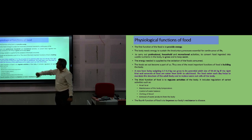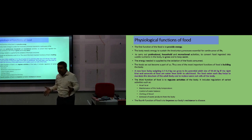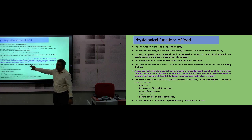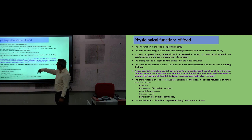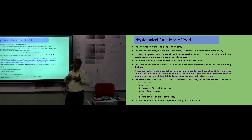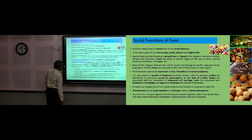Energy supplied for the oxidation of food makes food a part of us. One of the most important functions of food is body building. A newborn baby weighing 2.7 to 3.2 kg grows to a potential adult size of 55 to 60 kg — this is because they eat the right kinds and right amounts of food. From birth to adulthood, food helps maintain the structure of the adult body. The third function is to regulate body activities: heartbeats, maintenance of body temperature, control of water balance, flow of blood, and removal of waste products. The fourth function is to improve resistance to disease.